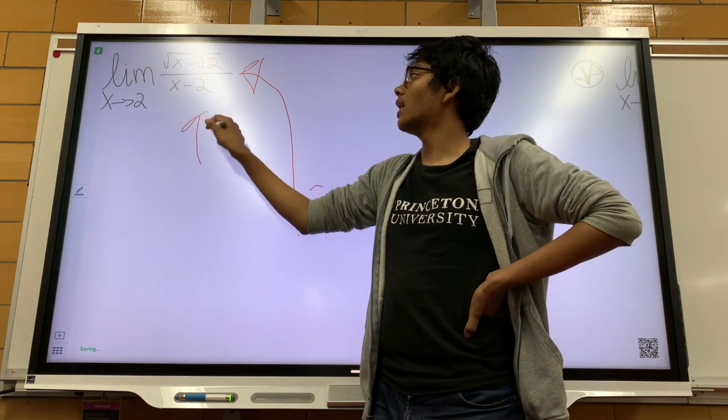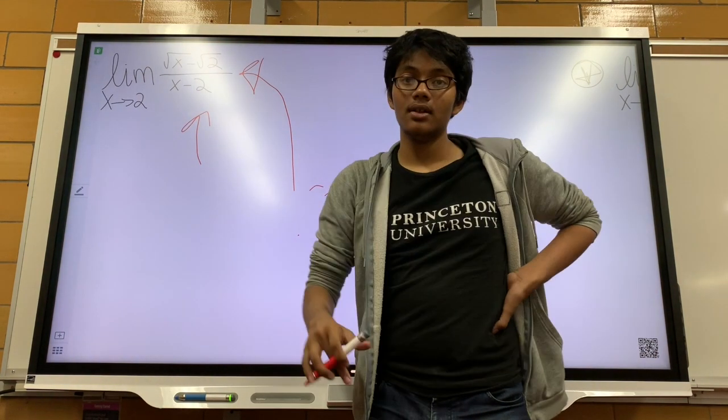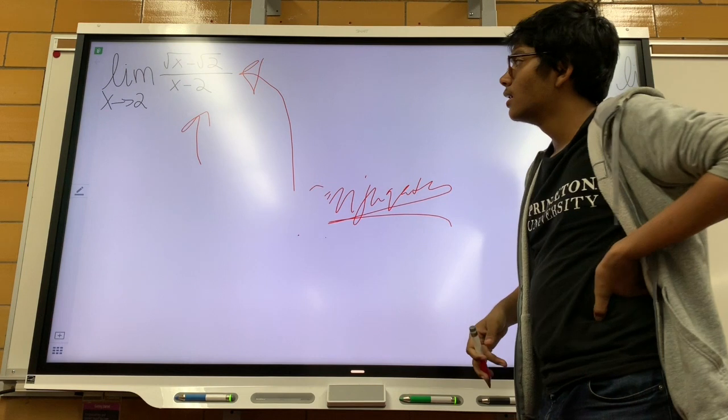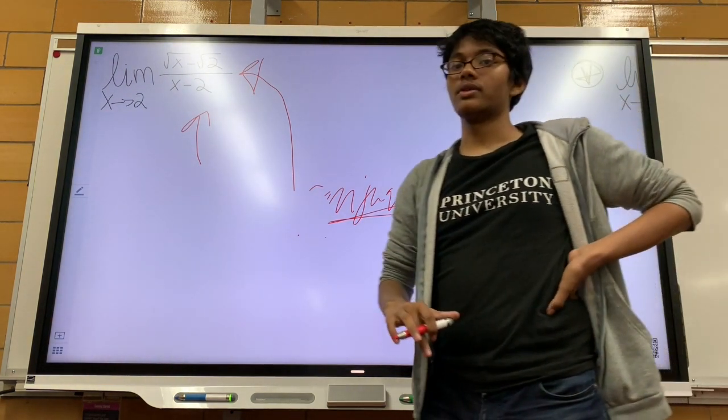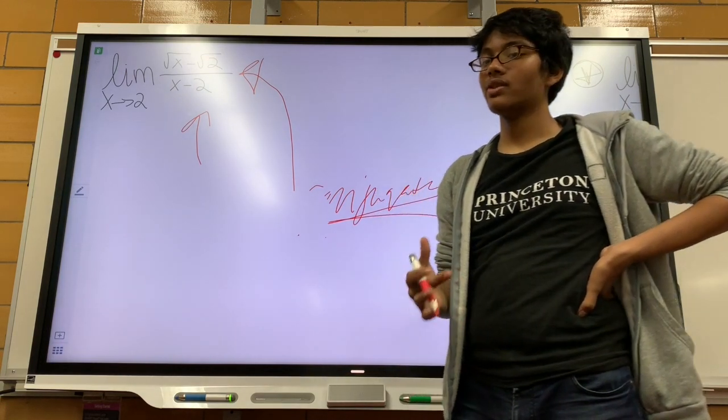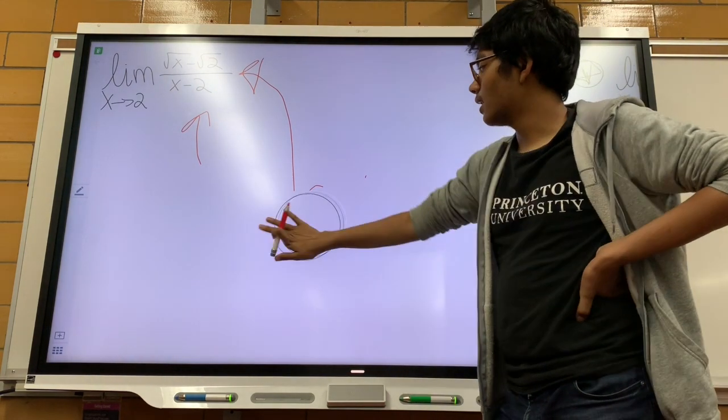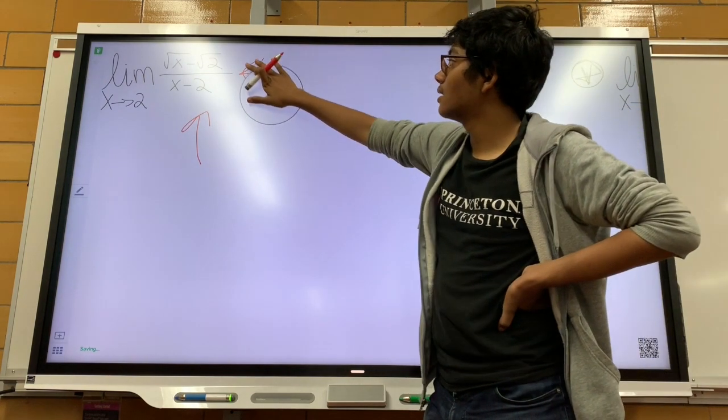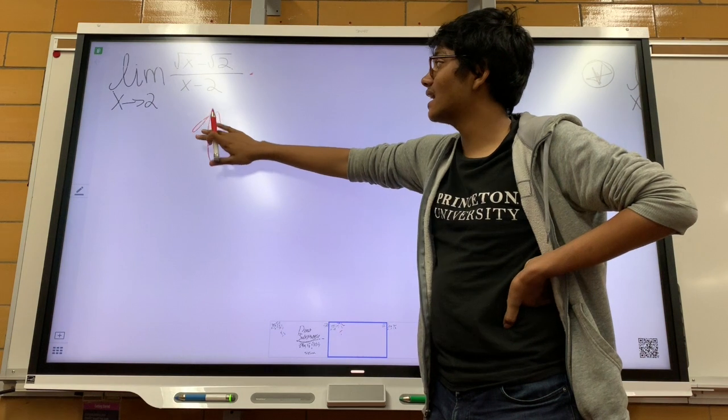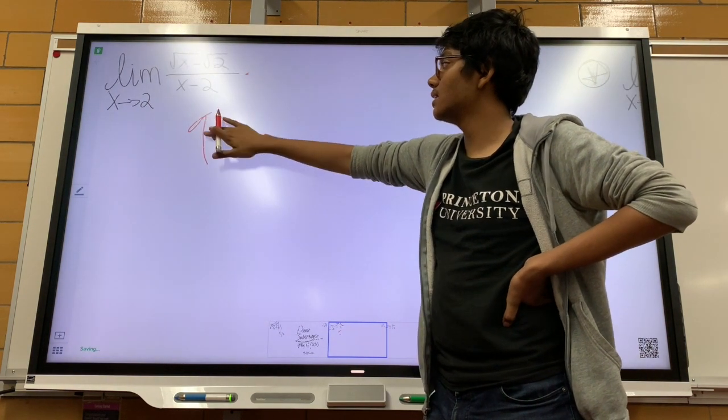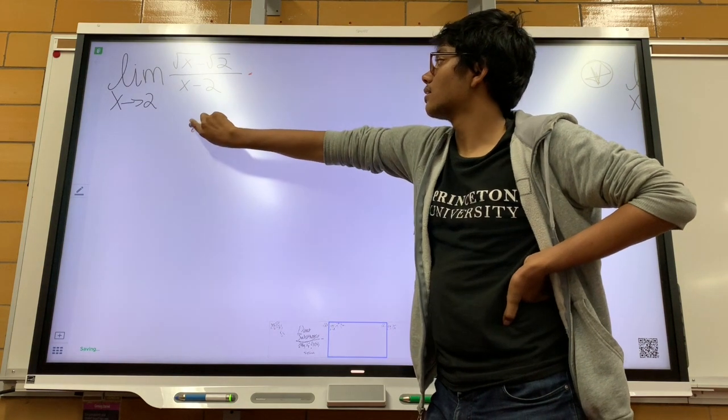If you plug in 2 for x in the denominator, the denominator is going to be 0 right here. So what do we do? We're going to try to work backwards. We're going to try to use the difference of perfect squares to our advantage. Let me show you how. I'm going to try to make x equals 2 a whole instead of a vertical asymptote. So let's see how I can do that.